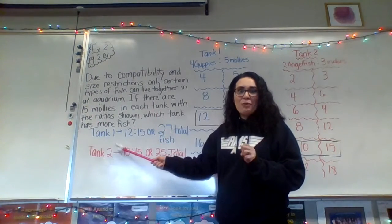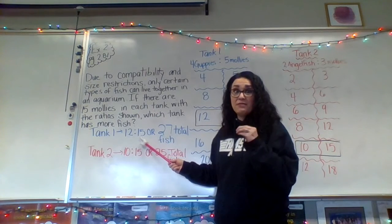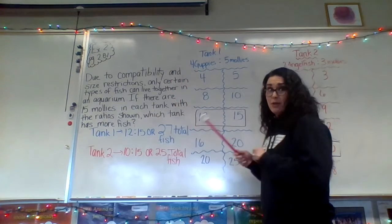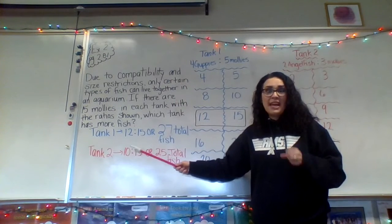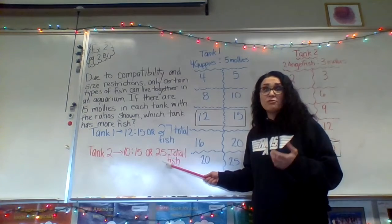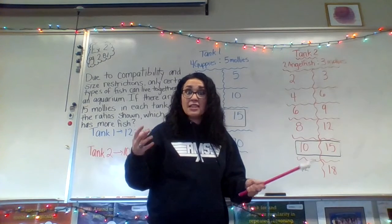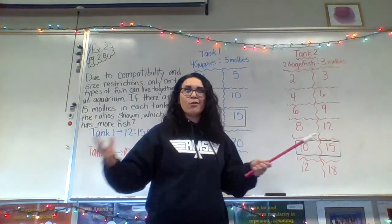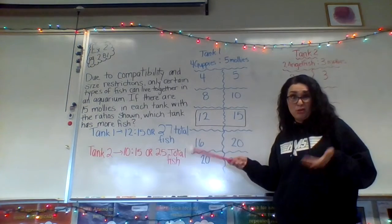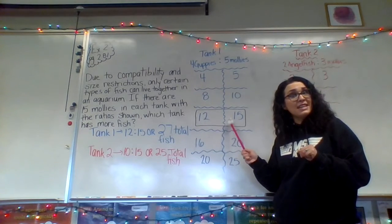In tank one, 12 guppies to 15 mollies gives 27 total fish. In tank two, 10 angelfish to 15 mollies gives 25 total fish. Since 27 is greater than 25, tank one will have more fish when it has 15 mollies.